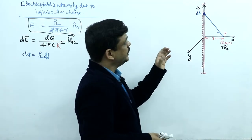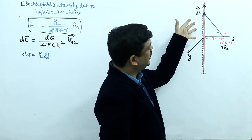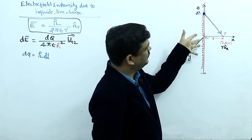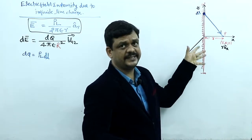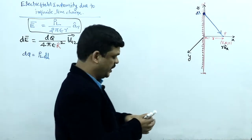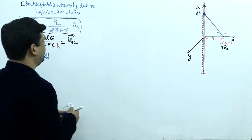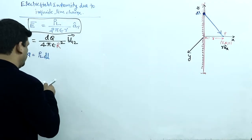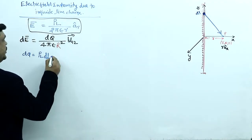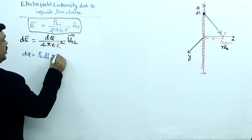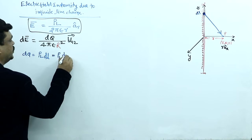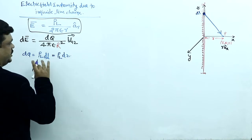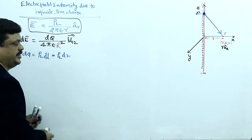Since the infinite line charge is placed on the z-axis, dl = dz. Therefore, dq = ρL · dz. This completes the expression for dq.